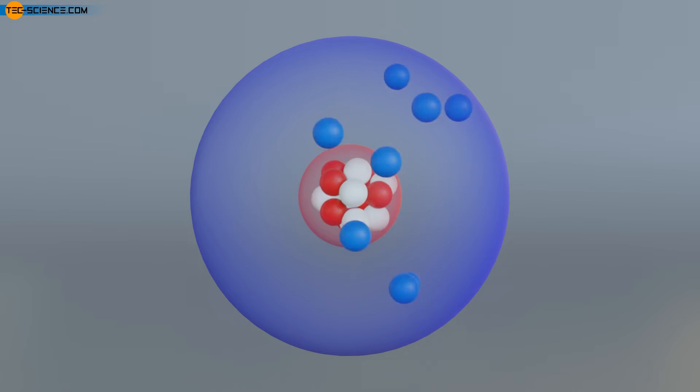The electrostatic forces of attraction between the positive nucleus and the negative electrons ensure that the orbiting electrons are held stably on their path around the atomic nucleus, so that the atom does not fall apart.